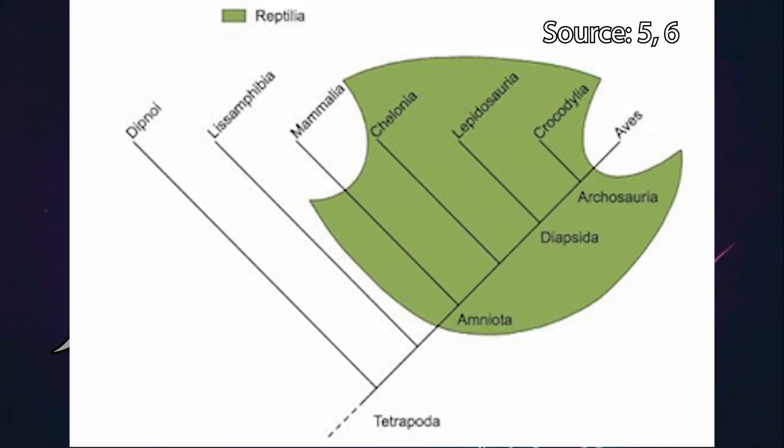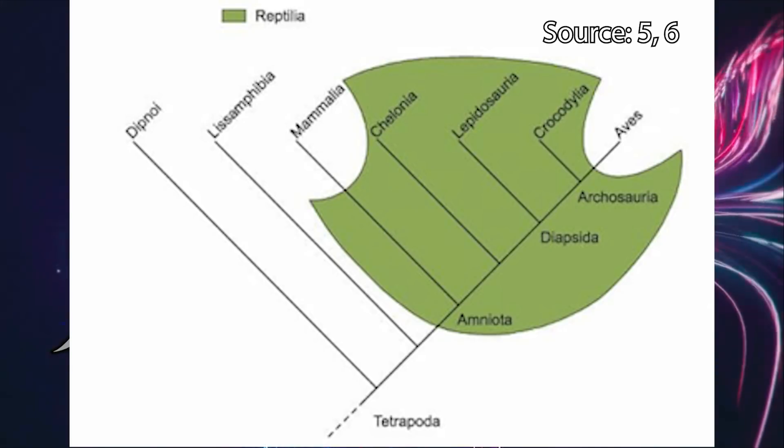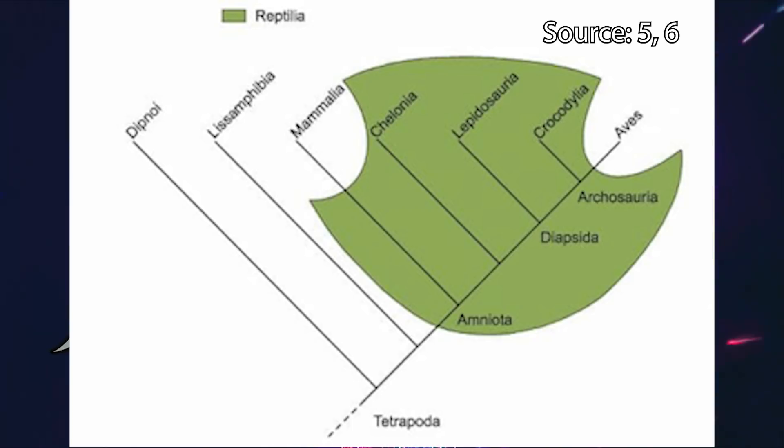But reptilia is paraphyletic. Mammals, birds, and crocodiles all share a common ancestor, but the characteristics used to describe a reptile do not apply to birds or mammals, so they are paraphyletic. To refer to the group that includes reptiles, birds, and mammals, it would be more proper to use the monophyletic term amniote, as that characteristic encompasses all of its descendants.